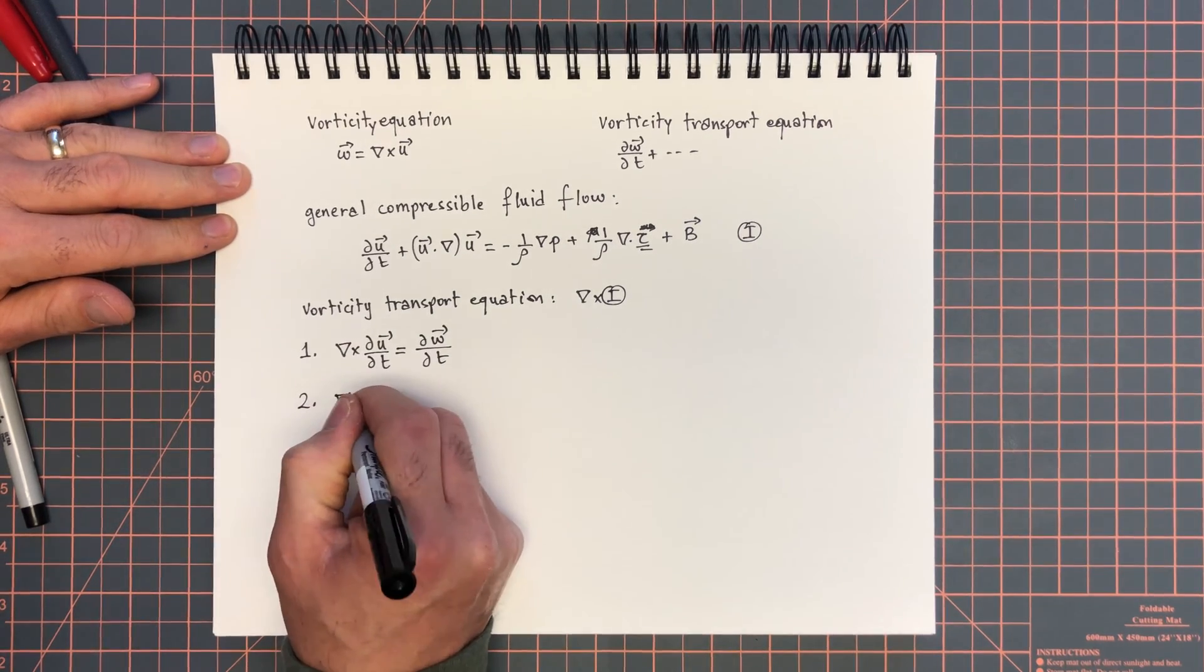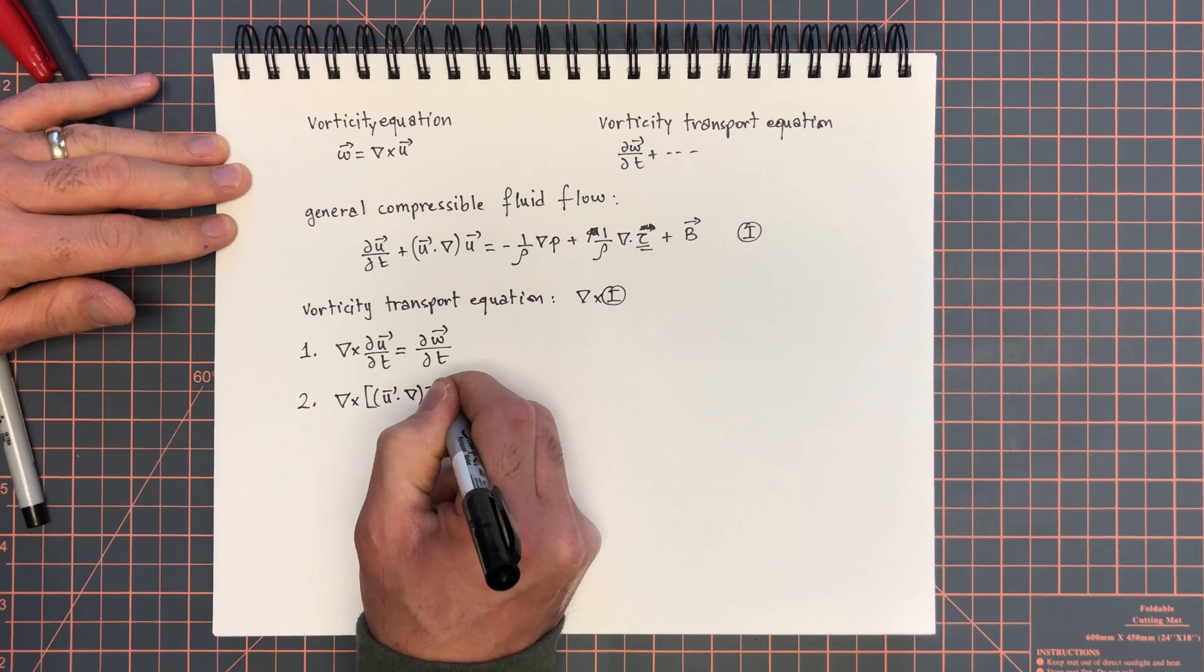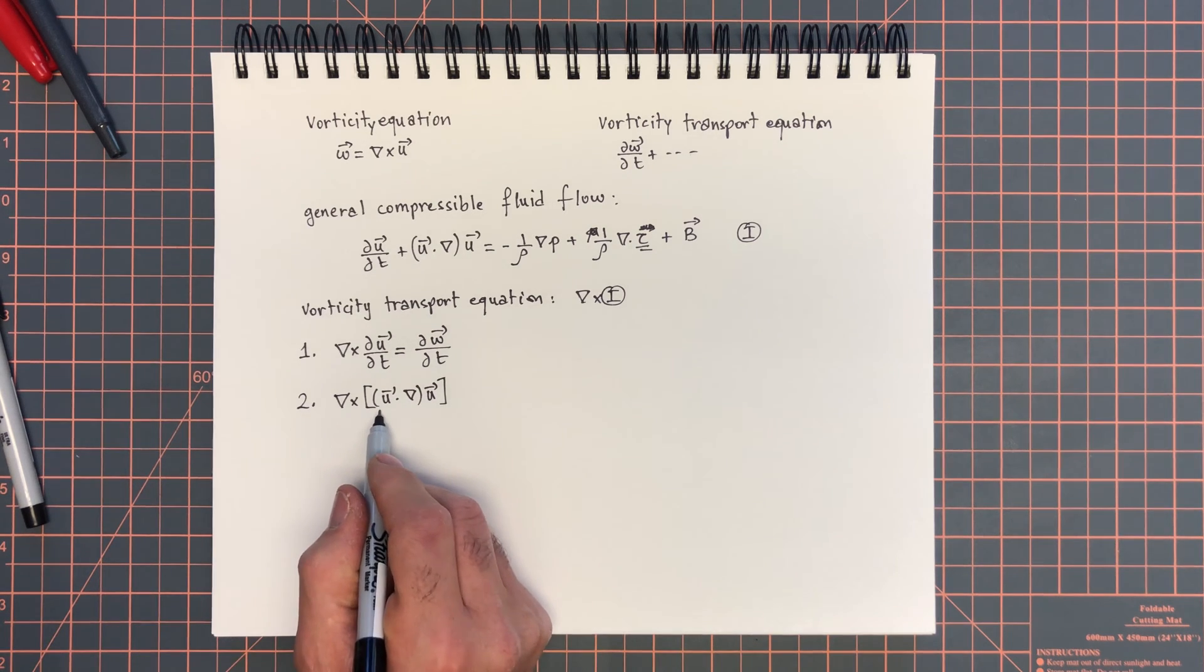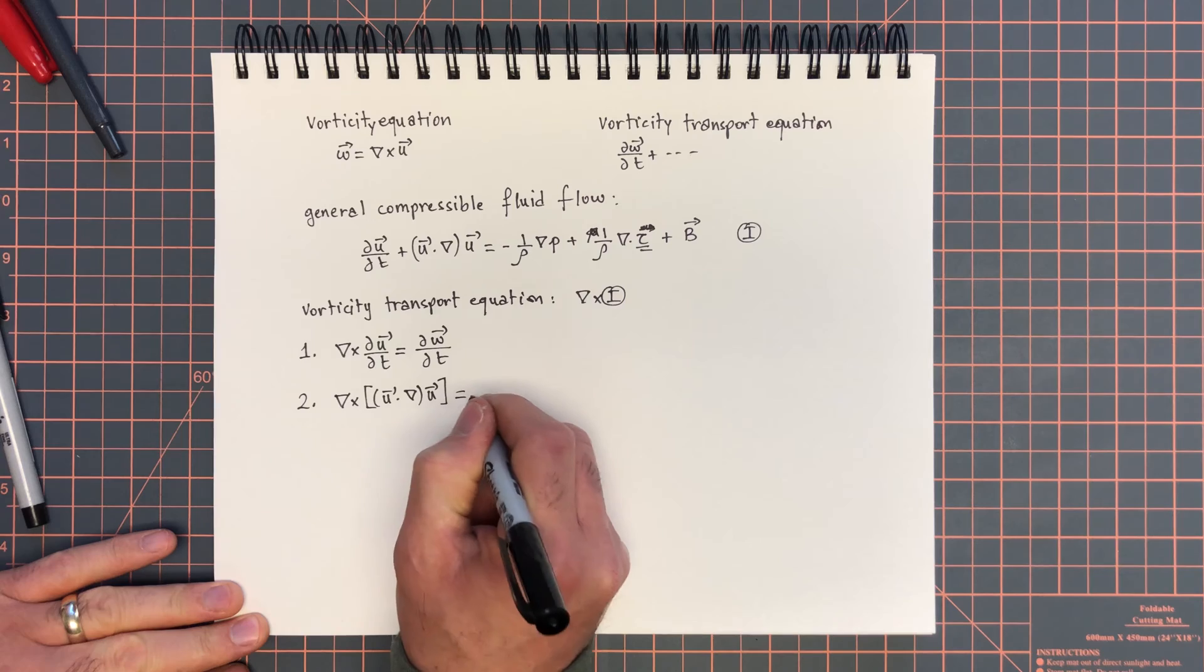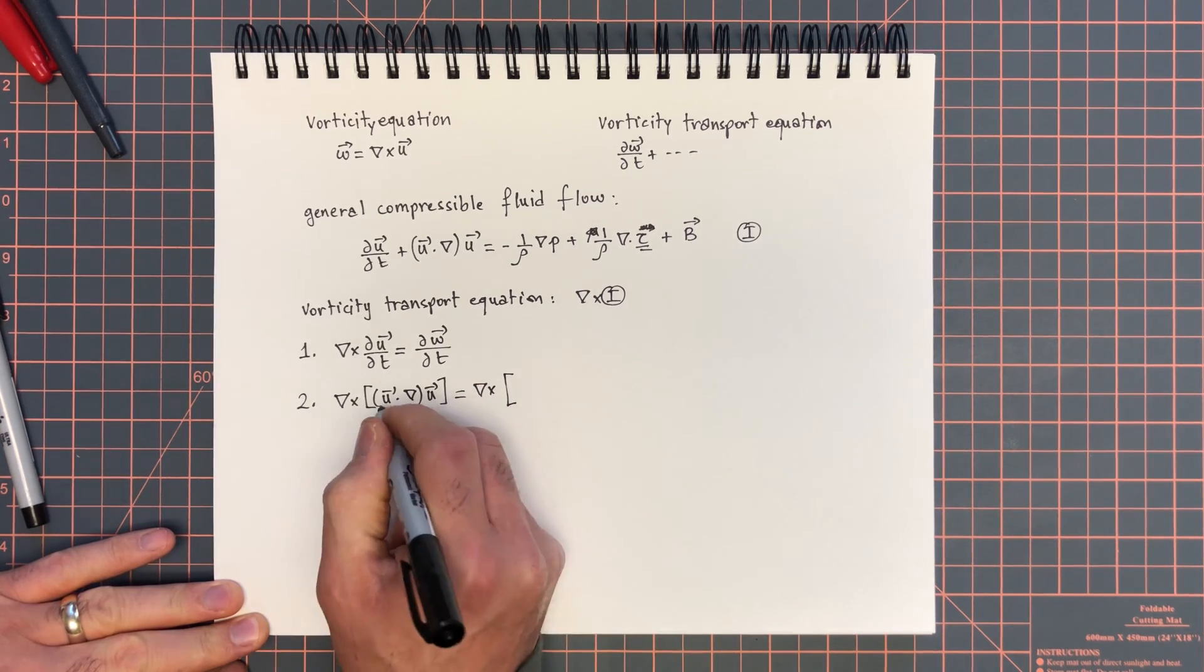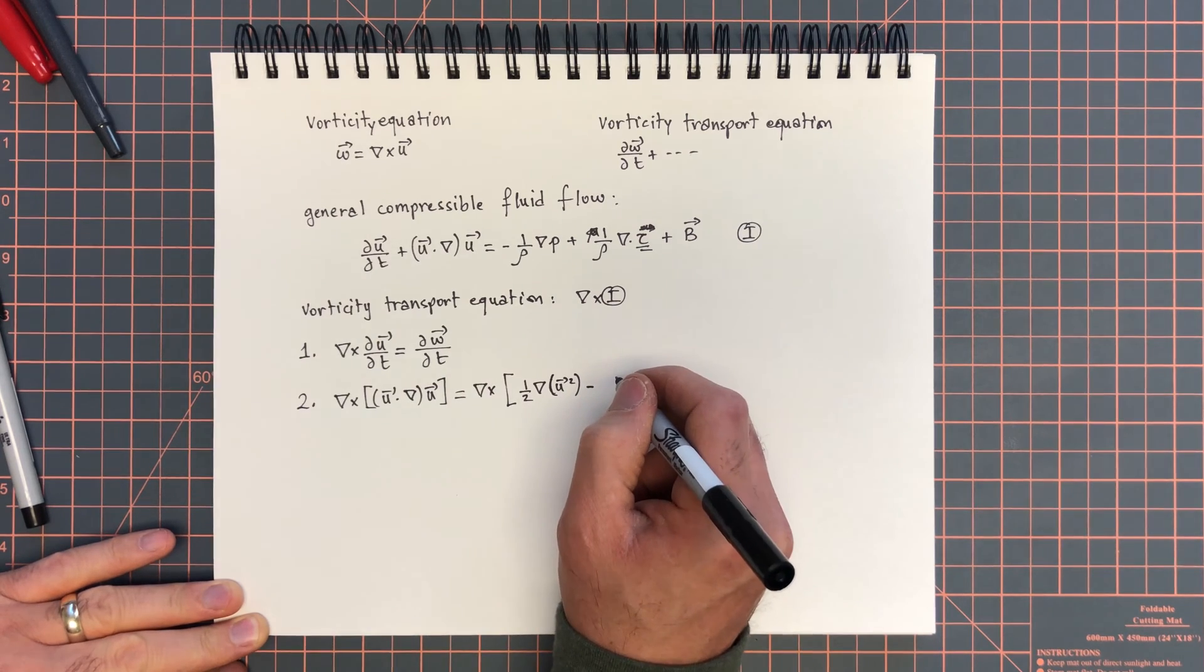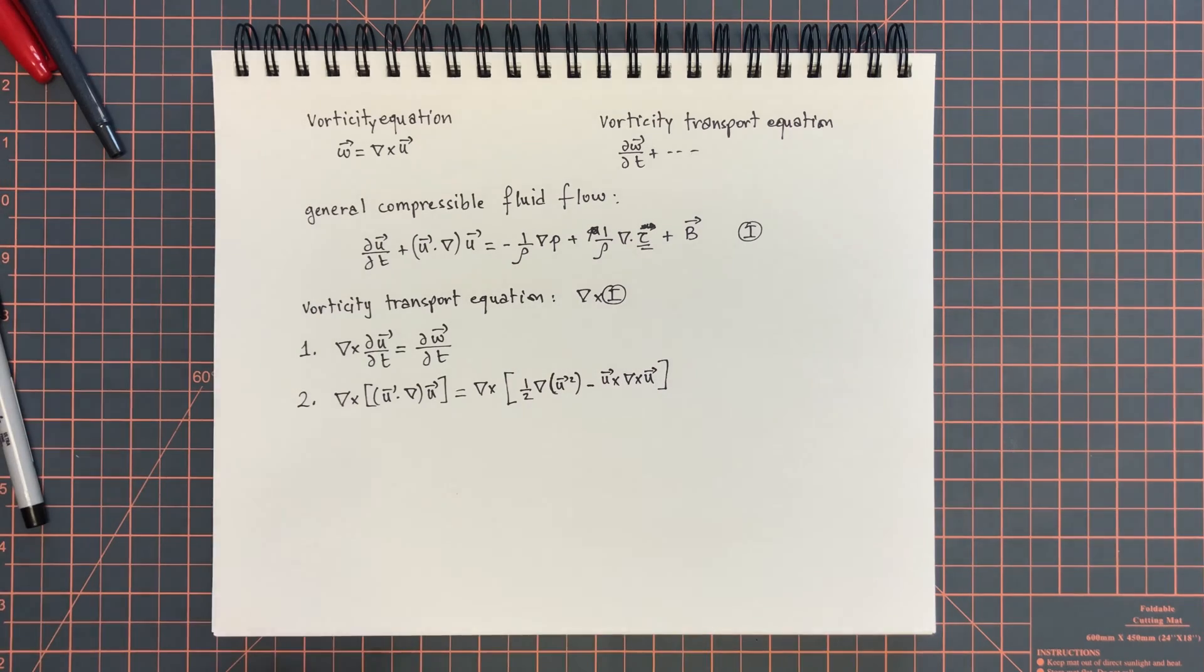Term number 2, the curl of u dot grad u. Now, this is going to take some additional work. First, we want to express this term using the vector identity that we used when we were deriving the Bernoulli equation. With this, we say this is the curl of, now this term is 1 over 2 nabla u squared, so u dot u, minus u cross curl u.